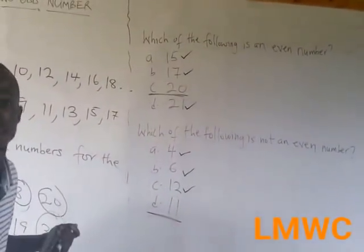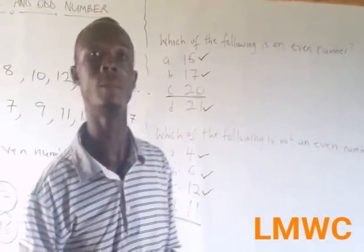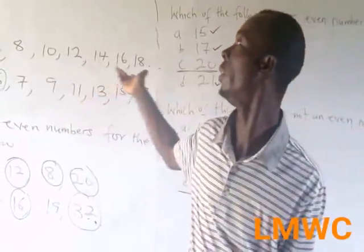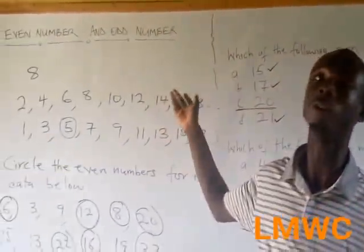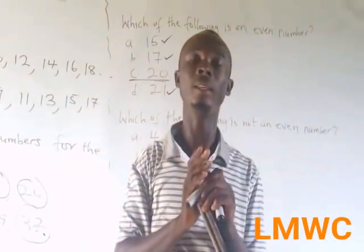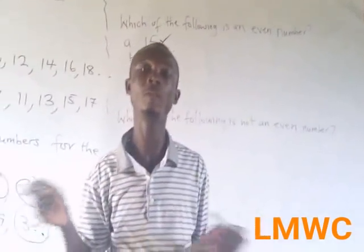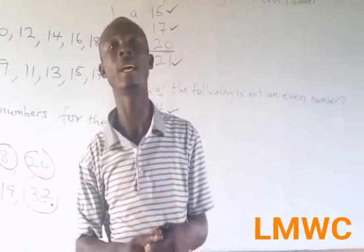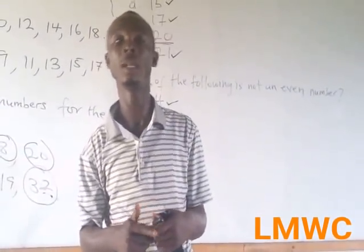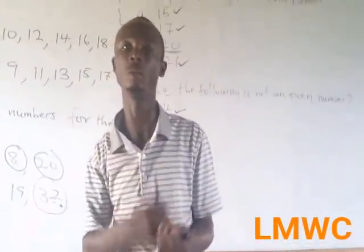So you can also be asked, which of the following is an odd number. However, the question is, I believe students, you have now gotten the concept between even number and odd number. It's not difficult. I have made the difference very simple. So to conclude, even numbers are numbers that are divisible by 2, and odd numbers are numbers that are not divisible by 2.